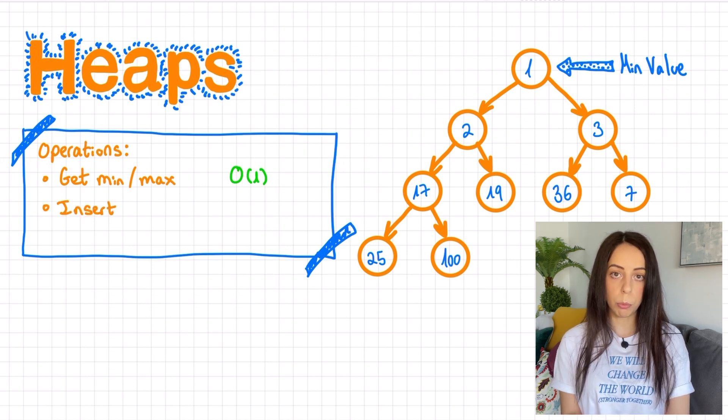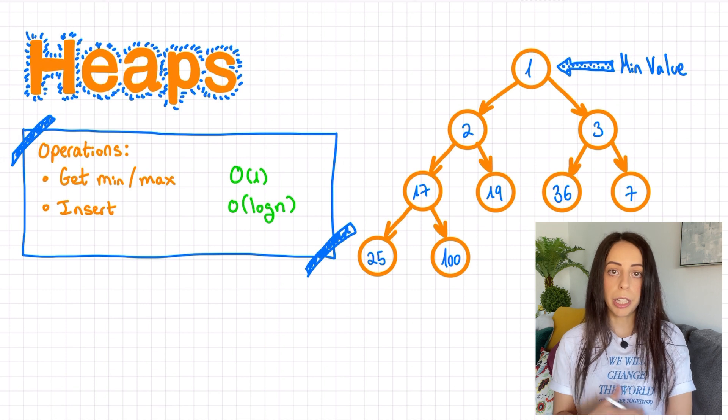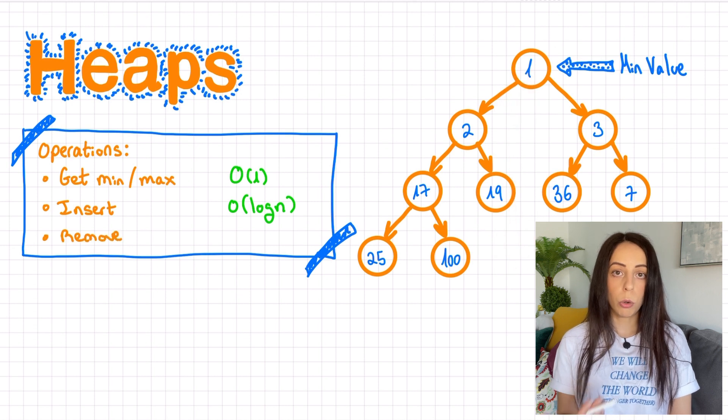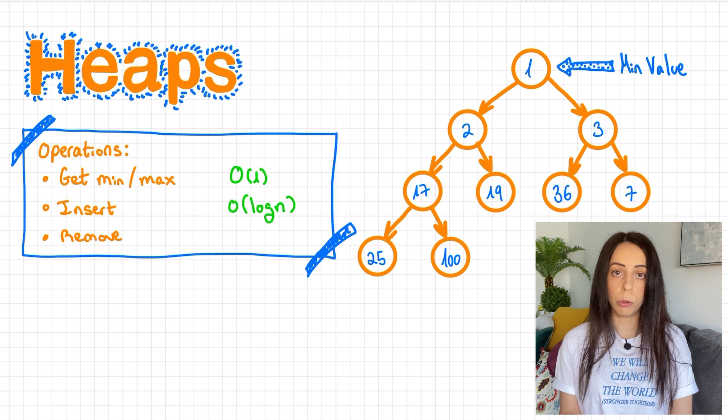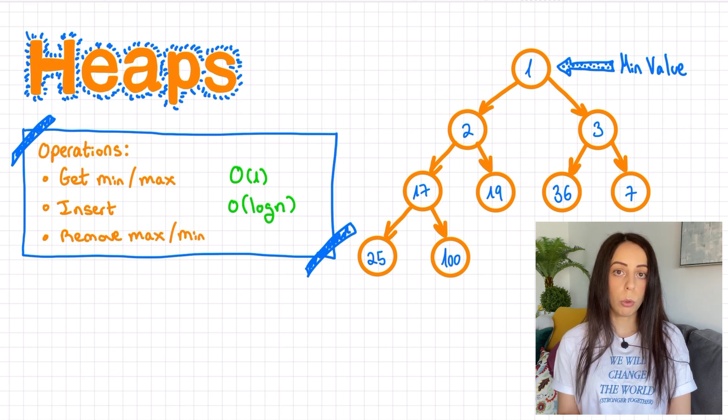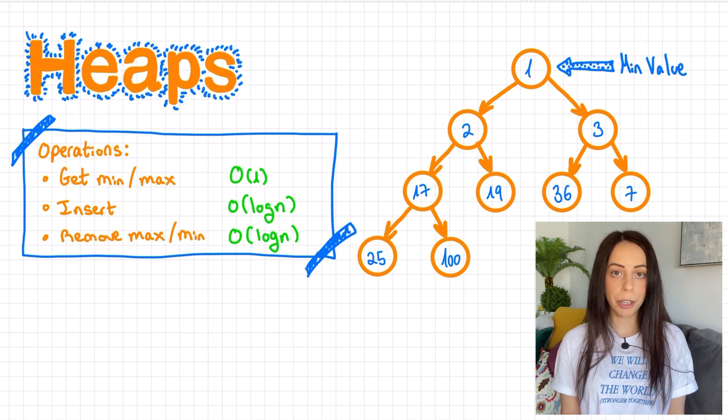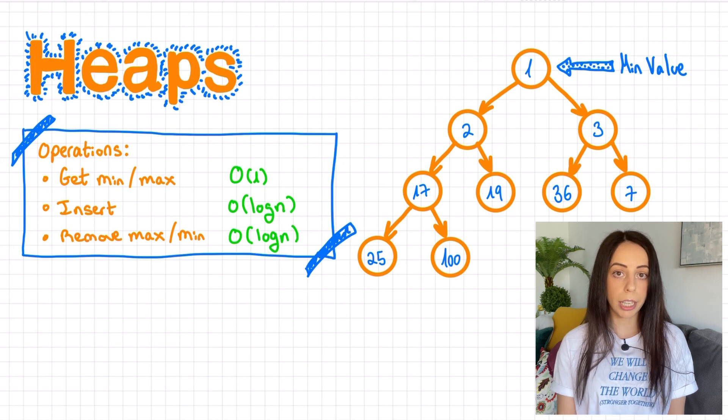Inserting a new value to the heap will take log n time. Without going into too much detail, this time complexity is a function of the height of the heap. Now removals. You can only remove the top element of a heap. So in a max heap, you can only remove the maximum value. In a min heap, you can only remove the minimum value. This will also take log n time. Again, it's a function of the height of the heap. So heaps are very useful for problems that require accessing the min or max value very quickly and very frequently.